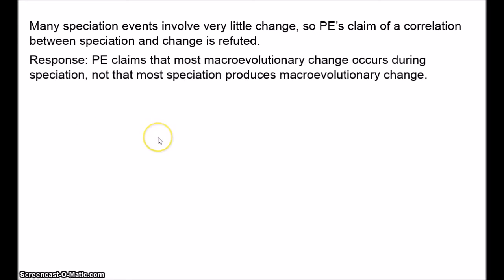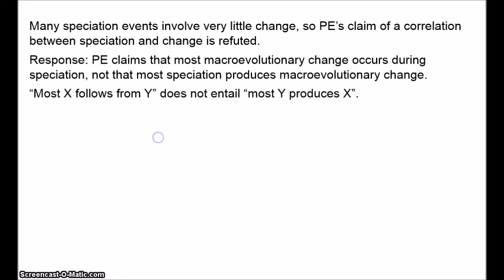This criticism rests on a simple confusion. Punctuated equilibrium claims that almost all macroevolutionary change occurs during speciation — it doesn't claim that almost all speciation produces macroevolutionary change. Most X follows from Y doesn't entail most Y produces X. If almost all Ebola infections cause death, that doesn't entail almost all deaths were caused by Ebola. To say many speciation events occur with little morphological change doesn't at all threaten punctuated equilibrium.